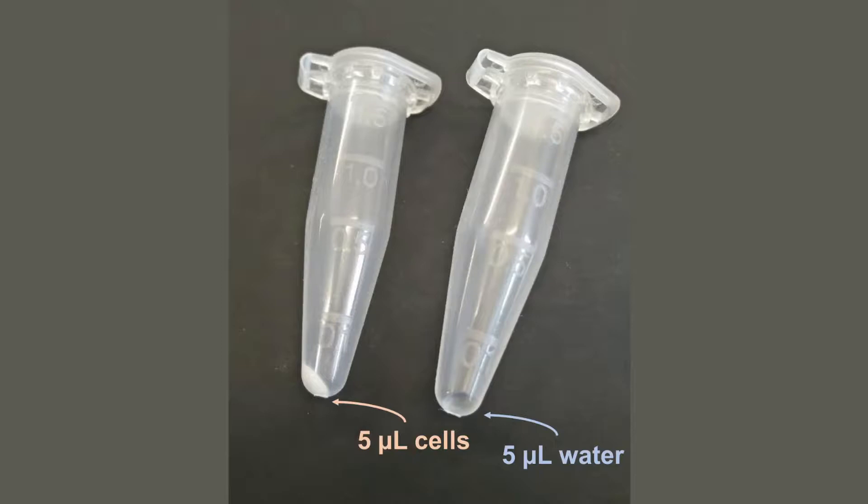Determining how much material generates a 5 microlitre pellet is visual. Pellet various quantities of cells and compare to 5 microlitres of water in an Eppendorf to determine what volume of cells is roughly equal to volume of water.